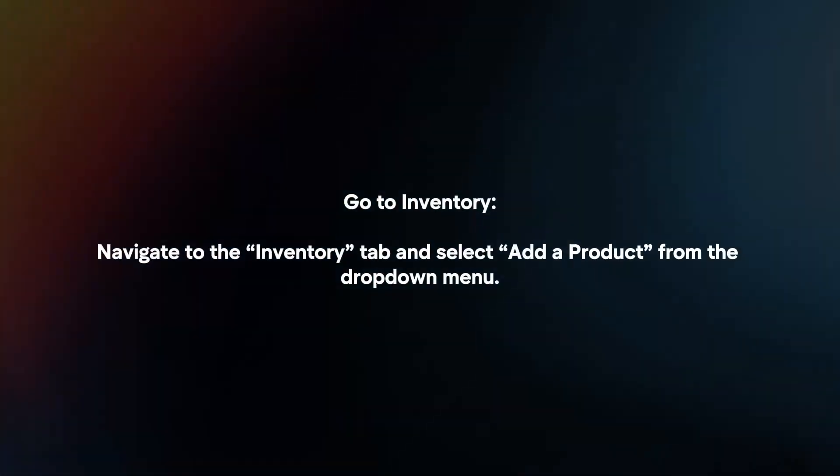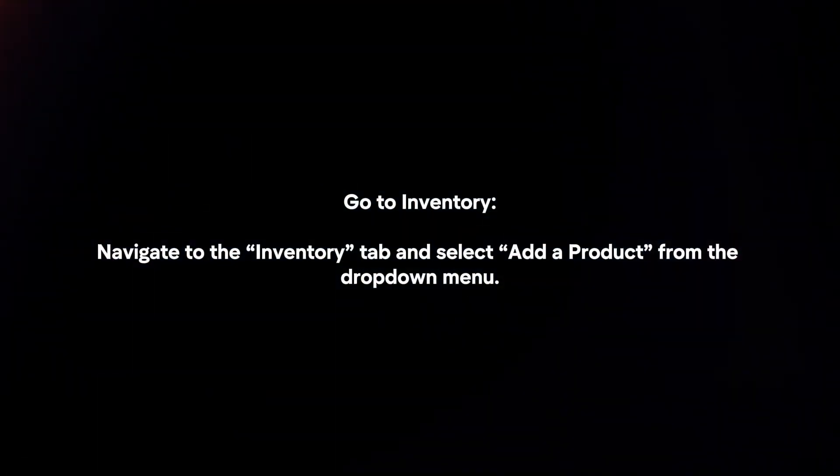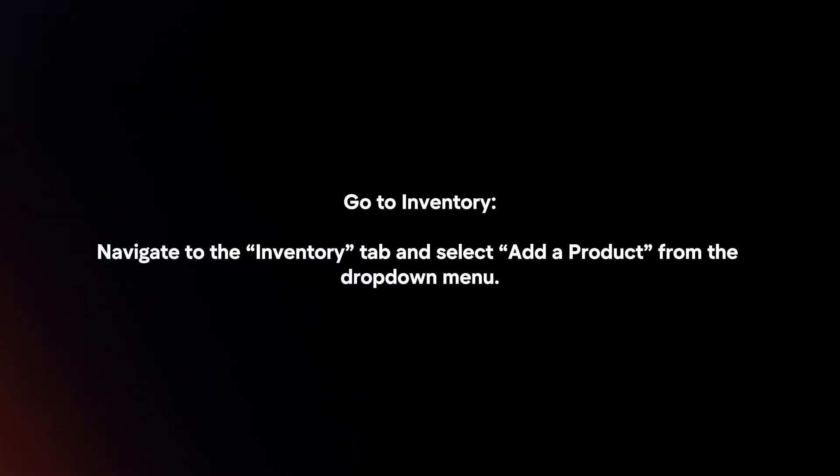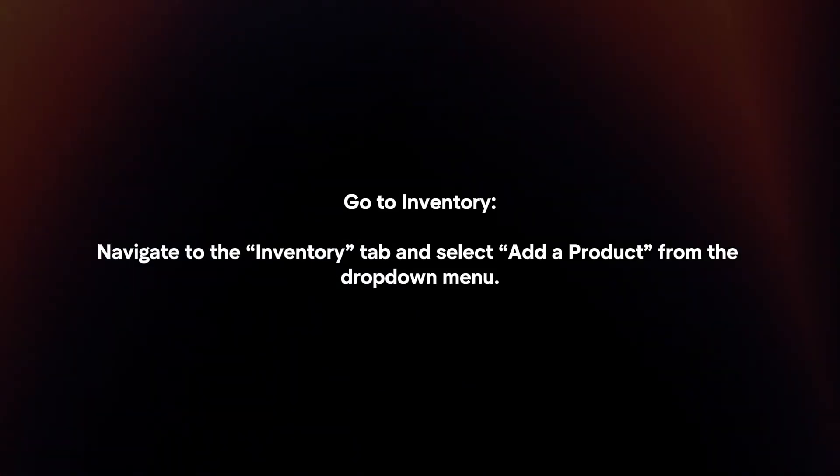Go to Inventory. Navigate to the Inventory tab and select Add a product from the drop-down menu.